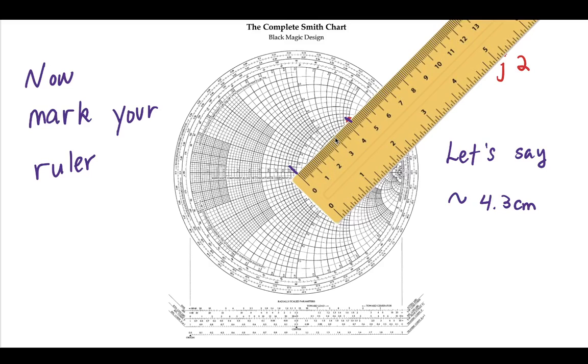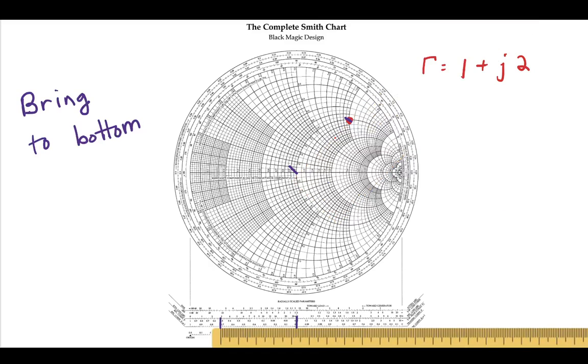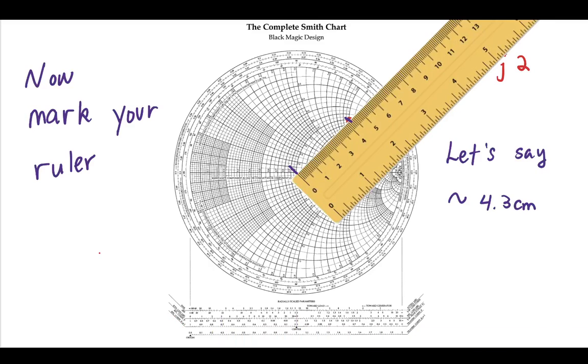Looking at mine, I'm going to say that this looks like 4.3 centimeters on this not to scale ruler. Now, if I take that and bring it to the bottom, there's a special line at the bottom that says reflection coefficient.